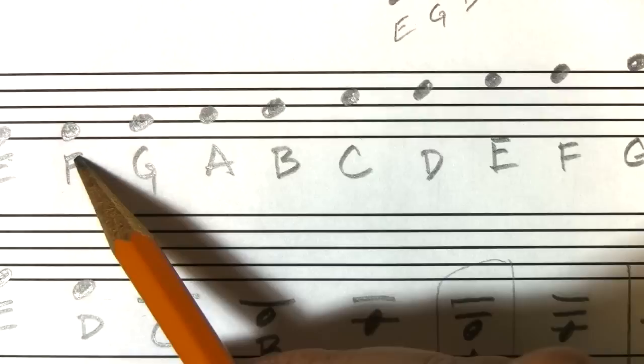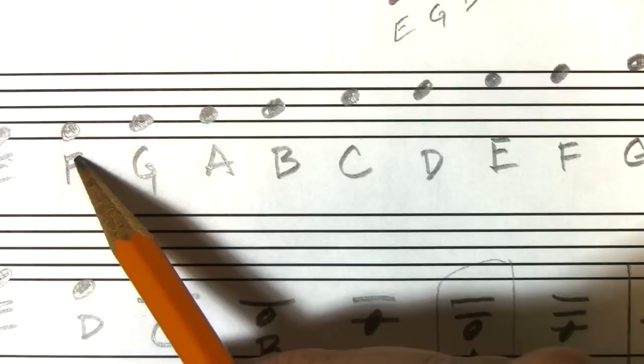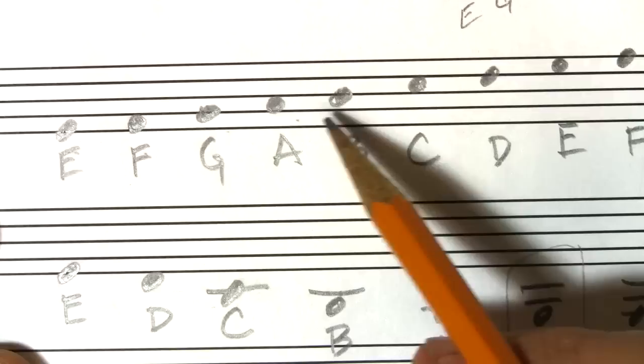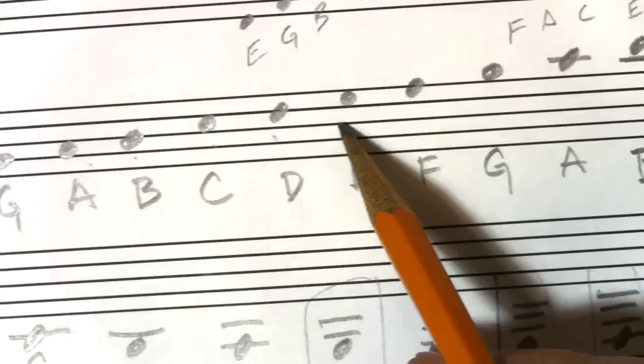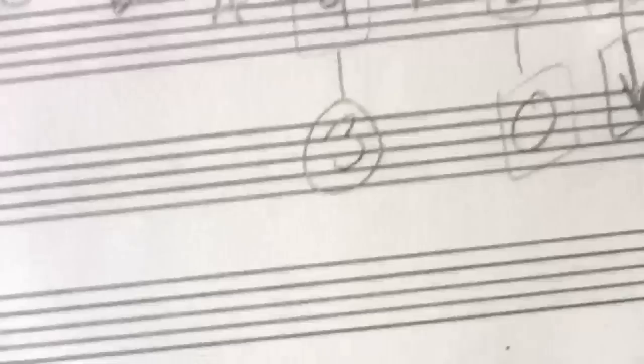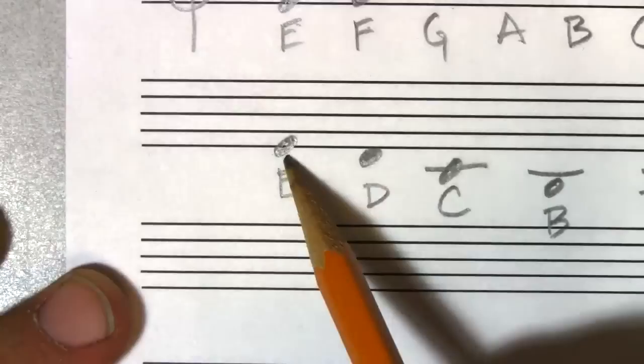So we've got the notes on the staff. Together, the lines and spaces give us E, F, G, A, B, C, D, E, F. And then one space above the staff is the note G.